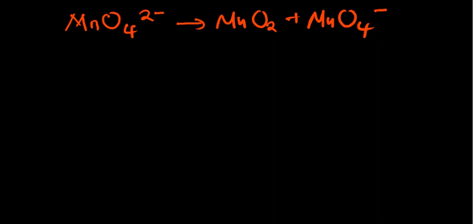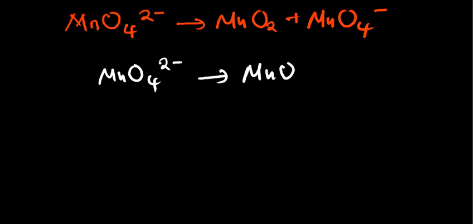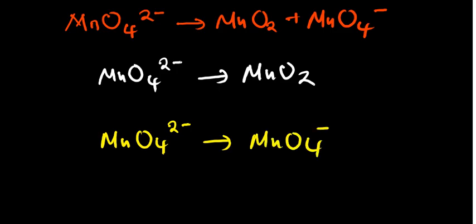Our first step is to split the reaction into its half-reactions. We only have a single reactant, so we'd have to relate it to both products. So first half-reaction: we have MnO4 2- related to our first product, MnO2. Then the other half-reaction: our only reactant again related to our other product, the second product.